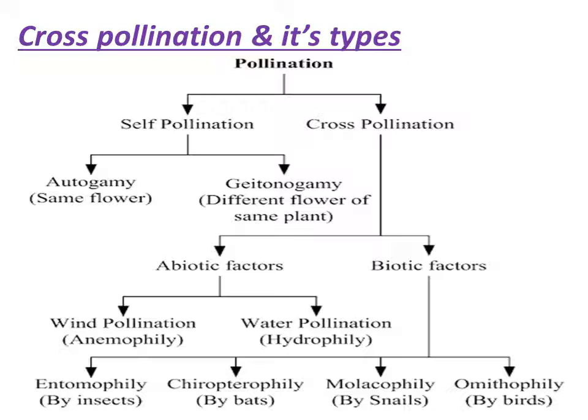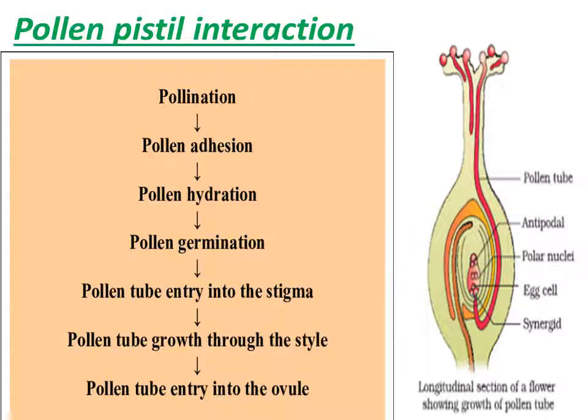We have discussed the different types of pollination: self-pollination within the same flower or different flowers of the same plant — autogamy and geitonogamy — and cross-pollination involving biotic and abiotic factors. After pollination, when the pollen grain reaches the stigma of the pistil, pollen-pistil interaction occurs. The germination of the pollen grain on the stigma and growth of the pollen tube through the style up to the embryo sac require favorable physical and chemical conditions.